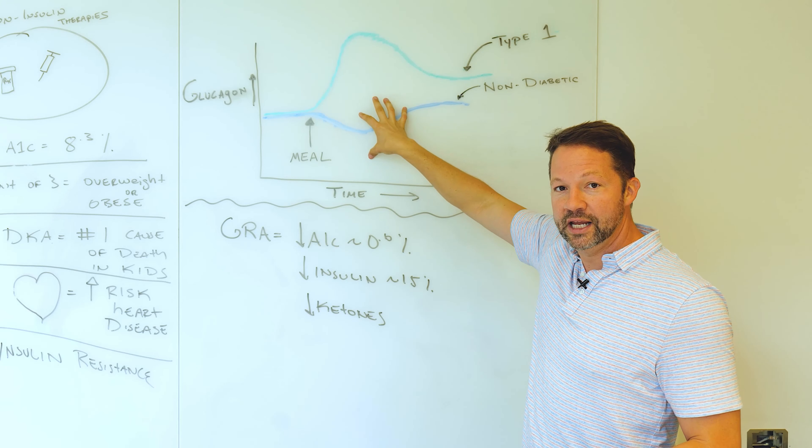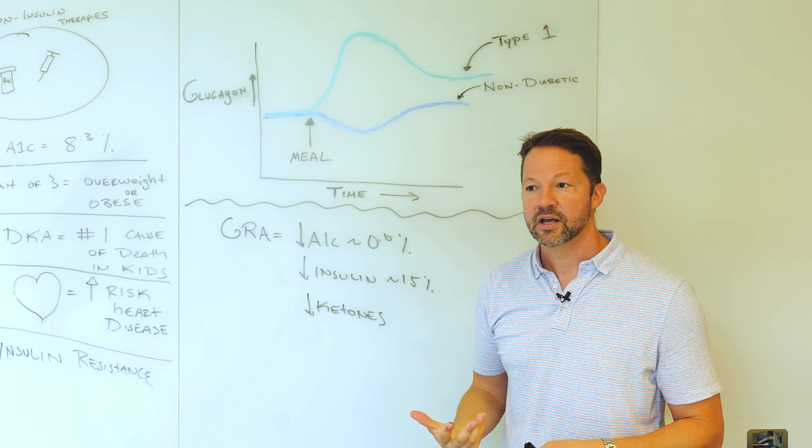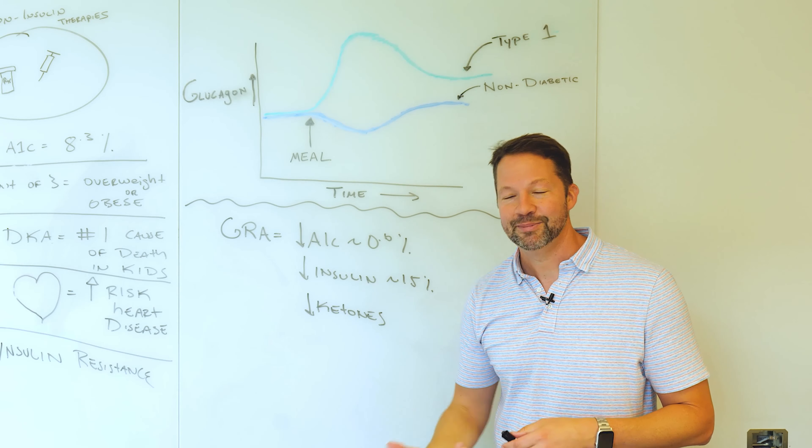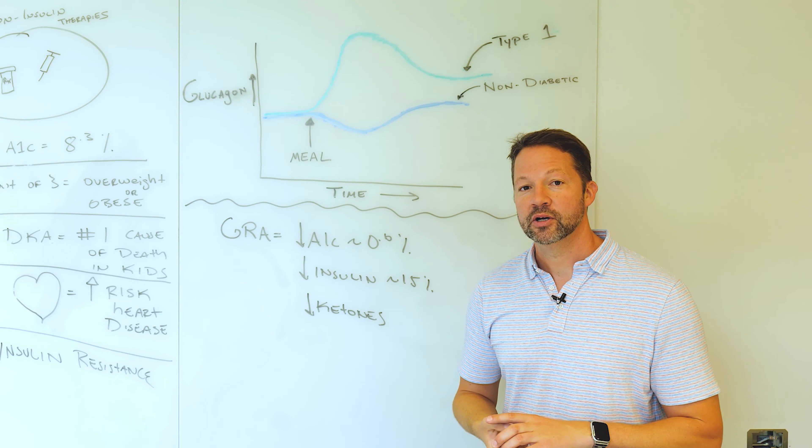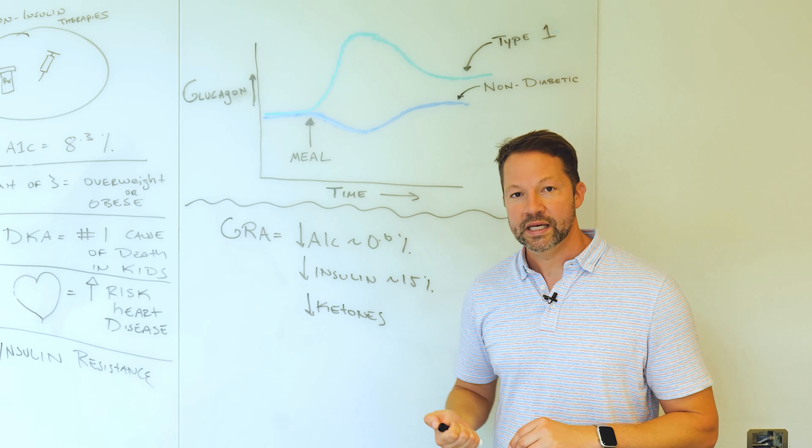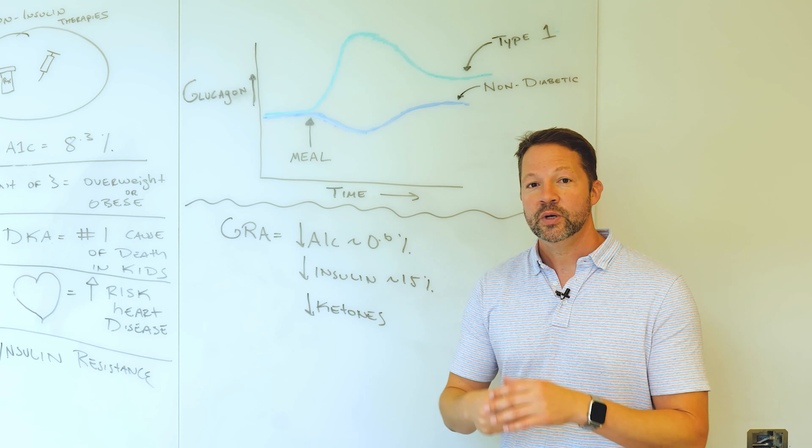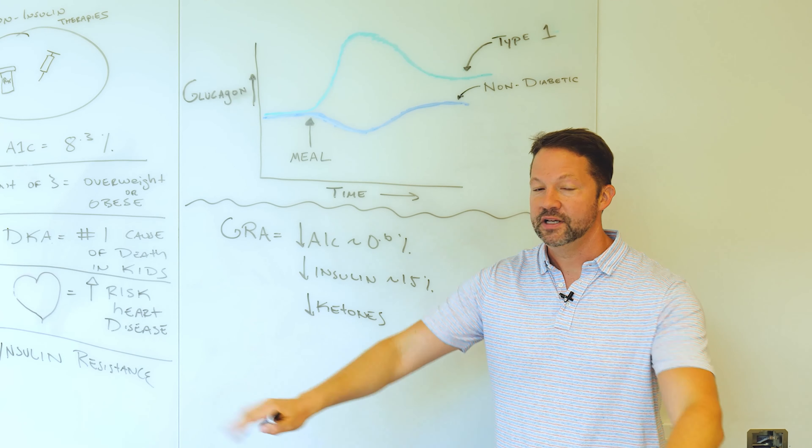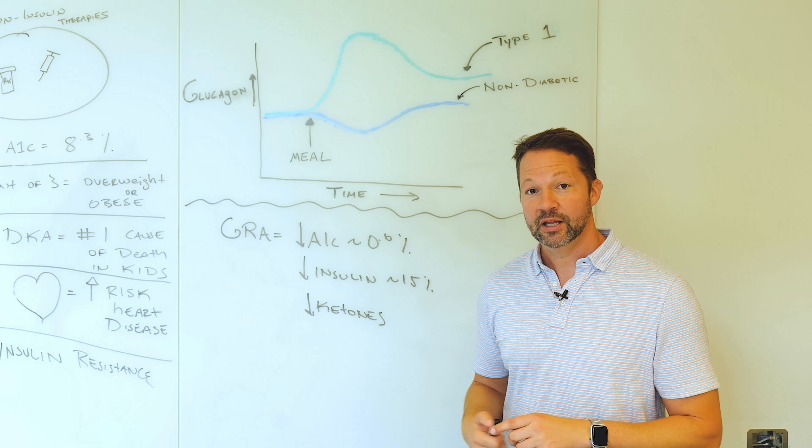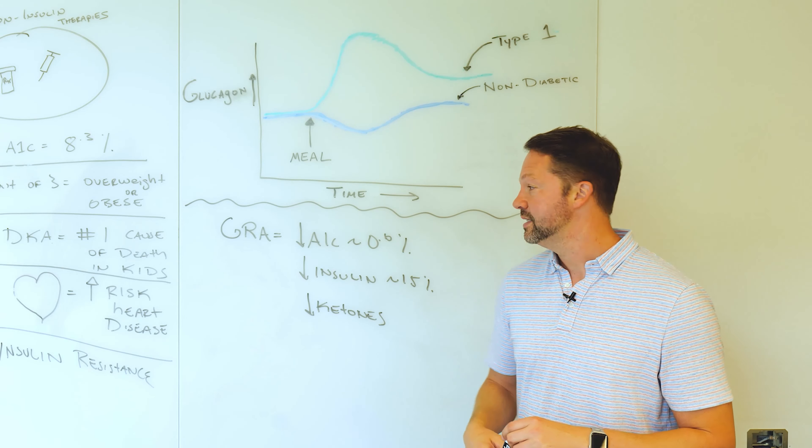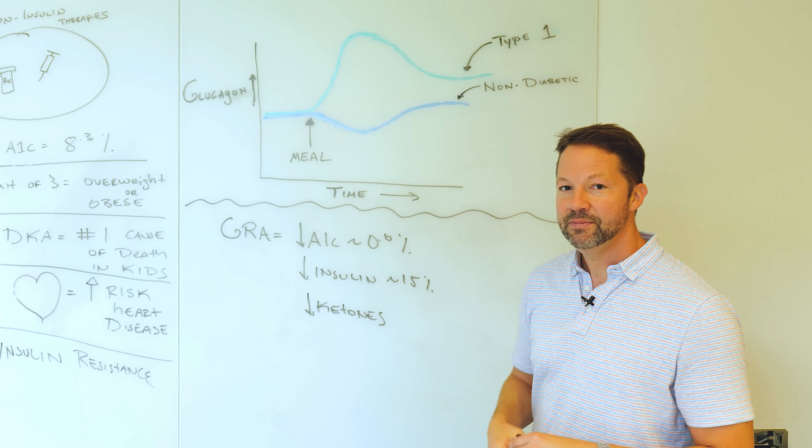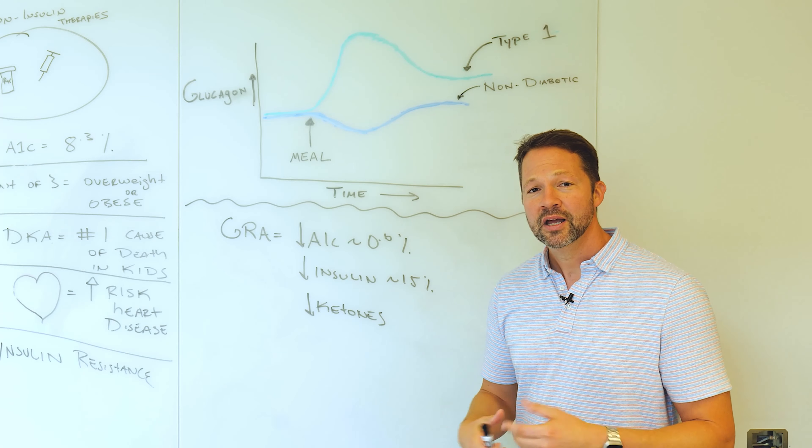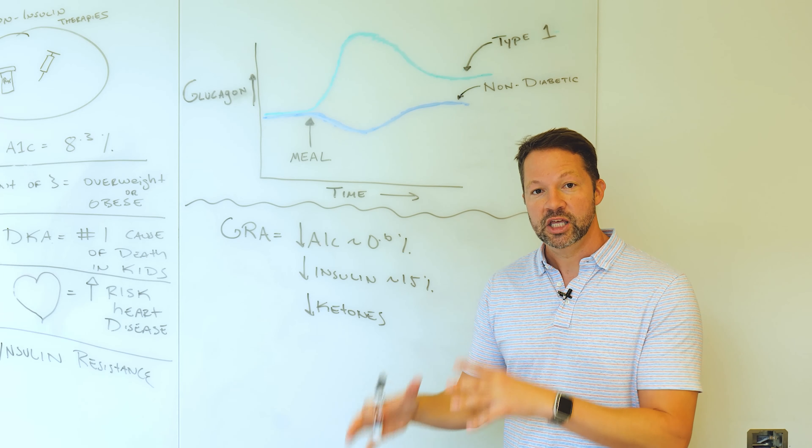So there's an opportunity here though, to correct this defect with something we call a glucagon receptor antagonist or a GRA. And we've been studying a particular compound. That's a once a week injection in people with type one diabetes. We just finished a large study in 150 type ones where we treated them with this drug for about three months and found that this once a week injection was able to lower people's A1C by about 0.6%, which for a type one drug is actually huge.